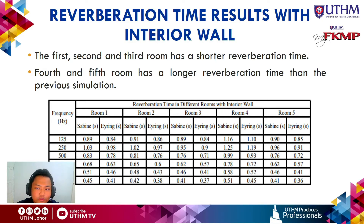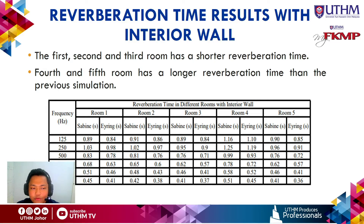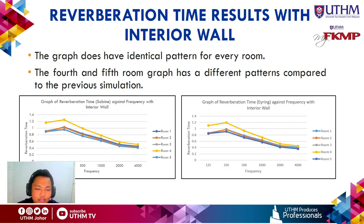Next are the reverberation time results with an interior wall. For rooms one, two, and three, both Sabine and Eyring produced shorter reverberation times compared to the first simulation, while rooms four and five had longer reverberation times compared to the first simulation. The graphs for the interior wall simulation show that all plots follow the same trend — increasing from 125 Hz to 250 Hz then dropping until 4000 Hz.